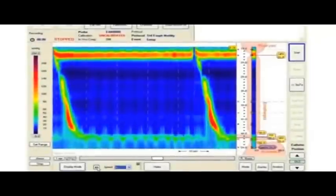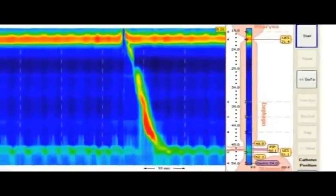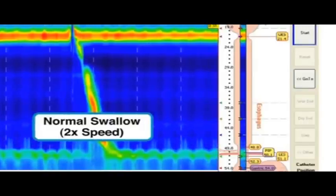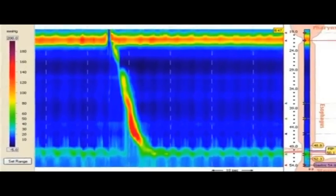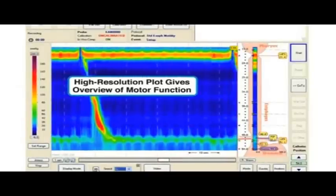For esophageal manometry, ManoScan provides full coverage from the pharynx to the stomach. The pressure profile on the right shows the real-time distribution of pressure in the organ, while the main display on the left gives the history of the study. This high-resolution format gives a clear overview of motor function.